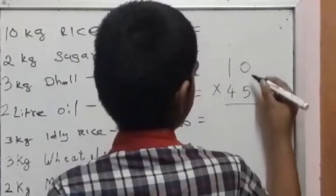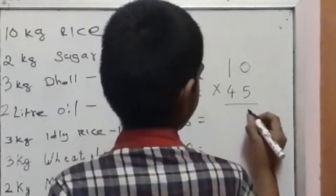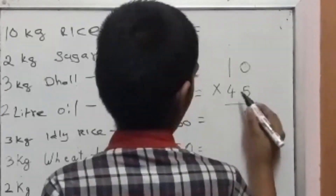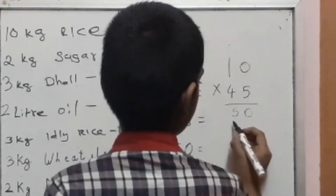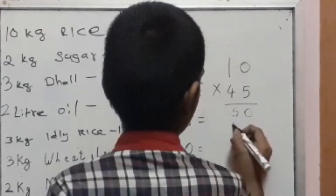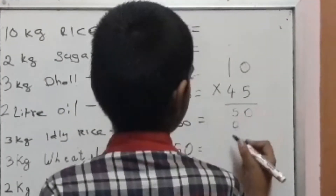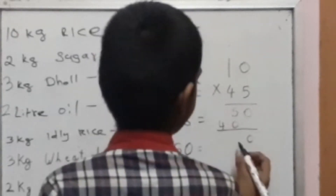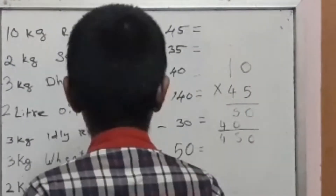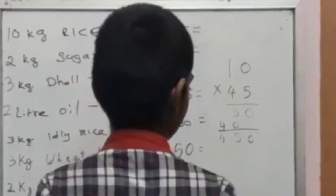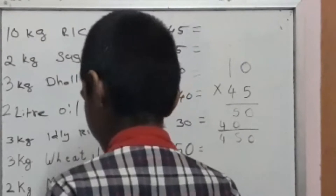5 into 0 is 0. 5 into 1 is 5. 4 into 0 is 0, 4 into 1 is 4. 5 plus 0 is 5. So the answer is 450.